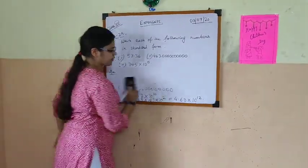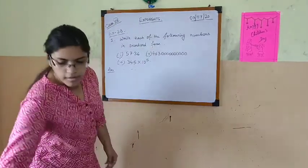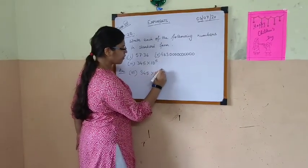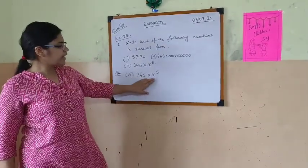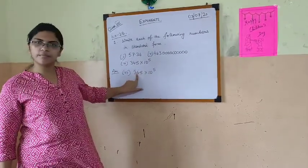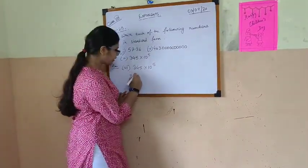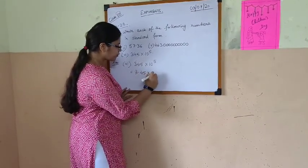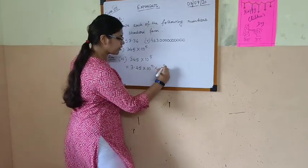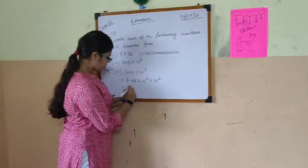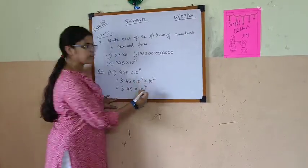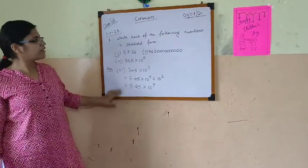Now number 6. We have 345 into 10 to the power 5. So already it has exponential form here. So only what we need to do is we need to put a decimal point. So for putting the decimal point after 3, we will have to shift 2 digits. So for 2 digits this will be 10 to the power 2. So that means now this will be 3.45 into 10 to the power 5 plus 2, which is 7. So this is our standard form: 3.45 into 10 to the power 7.